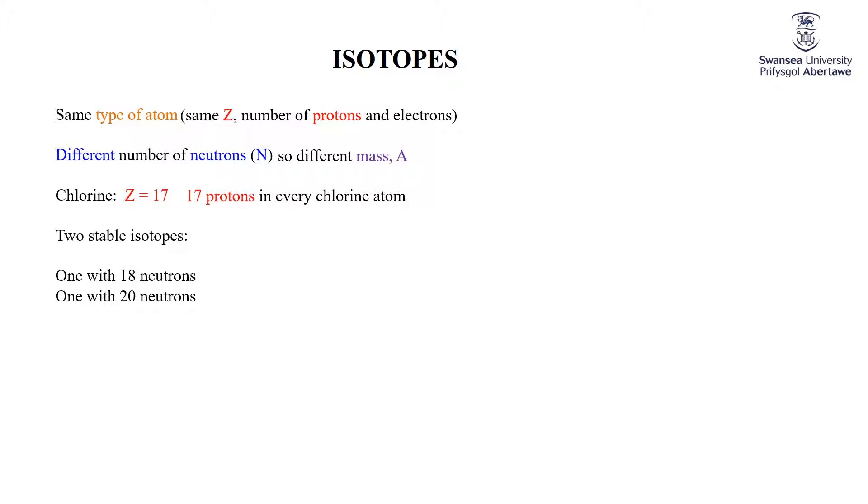Something that confuses students a bit is how can you tell? Well, the answer is you can't look at the periodic table and tell how many isotopes there are of a given type of atom. You certainly can't tell how many different neutrons there are in those different isotopes. From the periodic table, we can get first and foremost the number of protons.